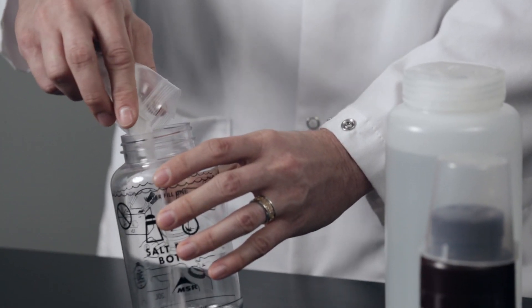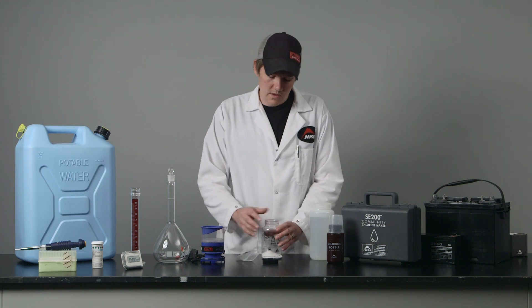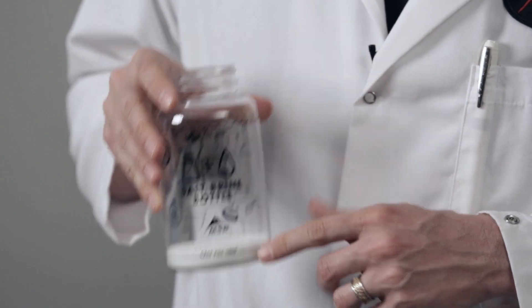It takes about 50 grams of salt for each run of the Community Chlorine Maker. So I'm going to add my salt, level it out a little bit, and make sure that I'm at the line or close to it.